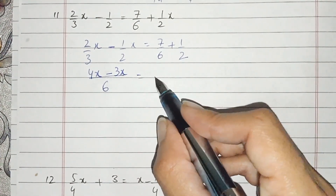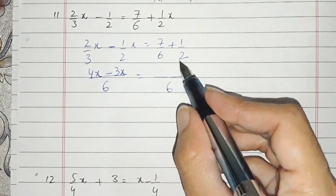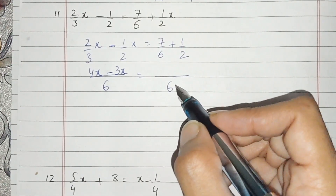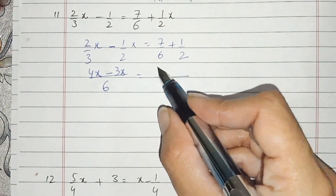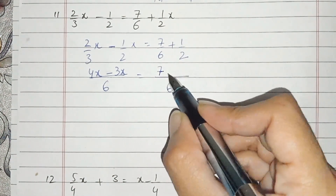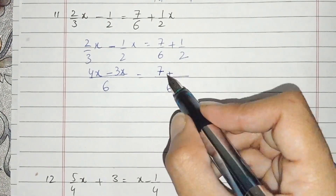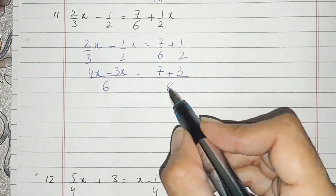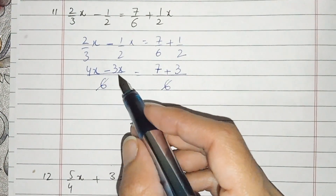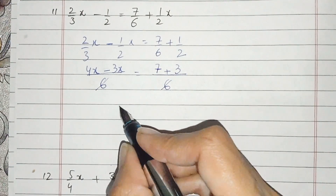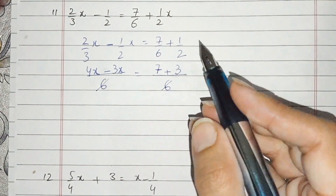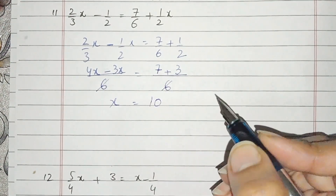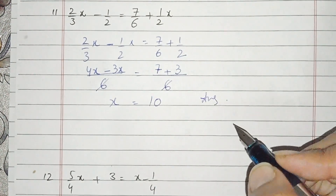x: 6, 3 go 1, multiply, we get 3x. This is 6. 1 times 6 is 6. Go 7, multiply, we get 7. 1 go 7, multiply: 7. And 2, 3 times: this is 3. This is 6. This is 6 — cancel, cancel. We get x. 4x, we get 3x, we get x. And 7, we get 3 plus, we get 10. And this is the answer of the 11th part. Now it's solved.